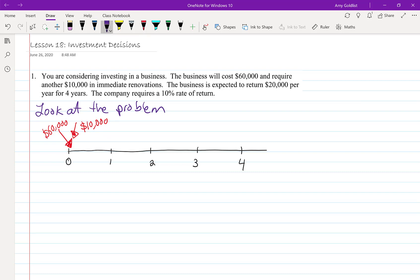Then we are also going to be making a return, that is $20,000 a year for four years. Let's put in all those $20,000 investments.